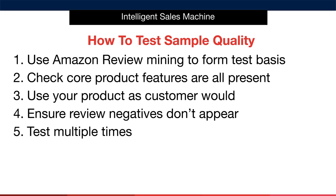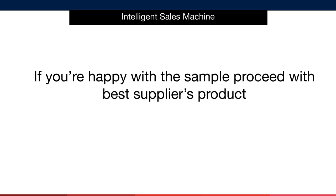If you remember our pool rake example from earlier, one of the complaints was that the item's mesh basket ripped easily. We'd want to test that rigorously to confirm that our item has a better quality mesh basket. We'll test every single negative that you've identified and take notes of any issues you see that you will later raise with the supplier. Repeat these tests with both your sample items from each supplier a few times to make sure that the item doesn't break after a few uses. You can also give the item to a friend or family member to use to test it even further. It's simple but very reliable.